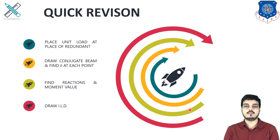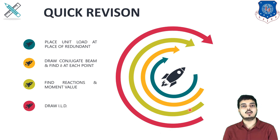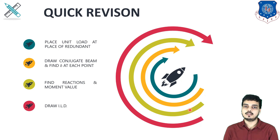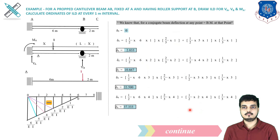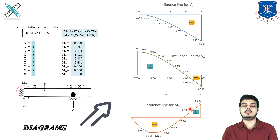Quick revision: we placed a unit load at the point of redundancy, drew the conjugate beam diagram, found the reactions, and then drew the influence line diagrams. This is how we solve influence line diagram problems for indeterminate structures with an overhang.